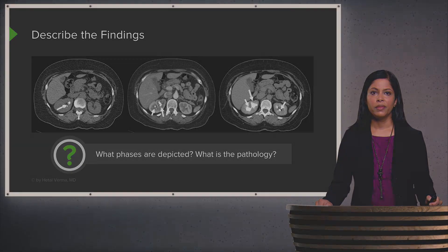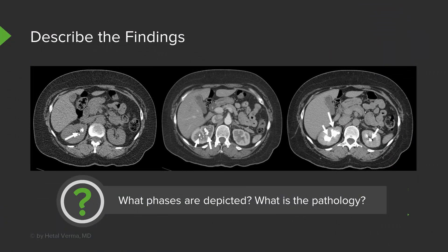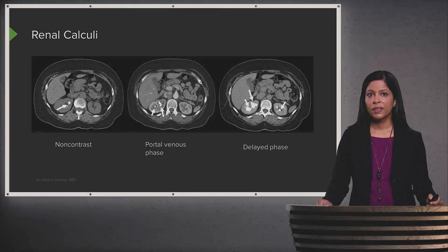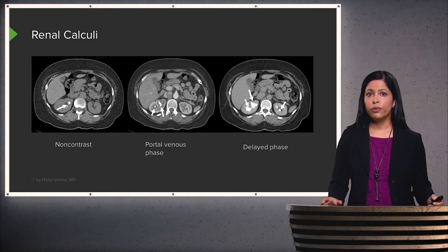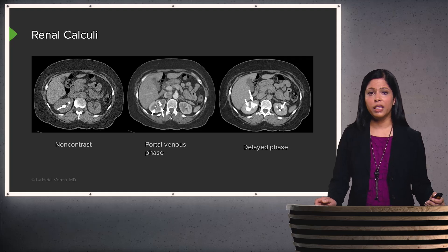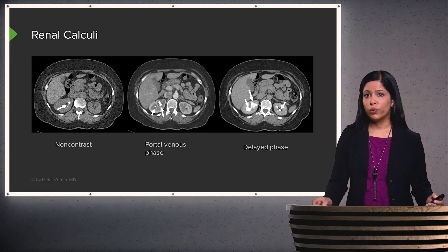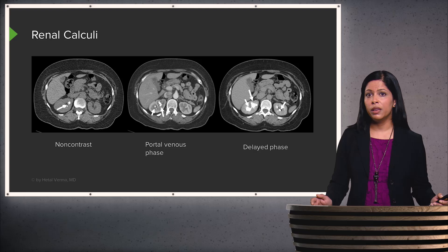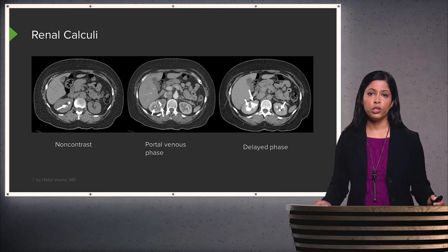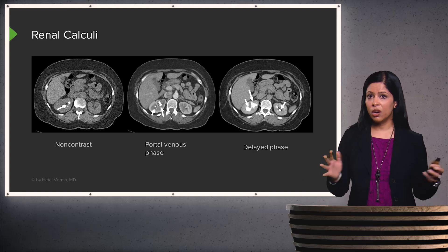This case example shows renal calculi across different imaging phases. The non-contrast scan shows a high-density stone within the kidney. The portal venous phase also shows the stone with surrounding contrast. However, on the delayed phase — performed at about 10 minutes — there is a large amount of contrast within the renal pelvis that obscures the stone. This is why you should not give contrast when suspecting a renal calculus, as the contrast may hide the stone.